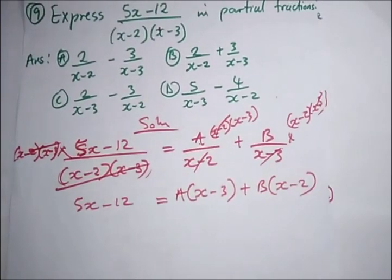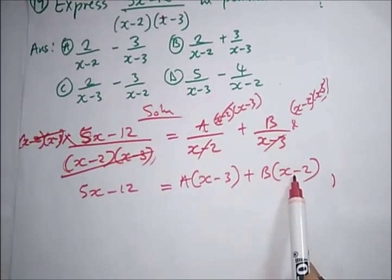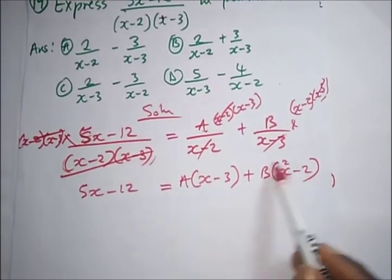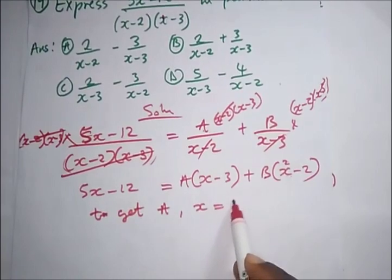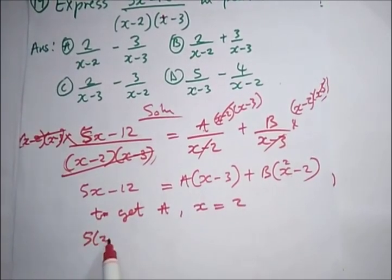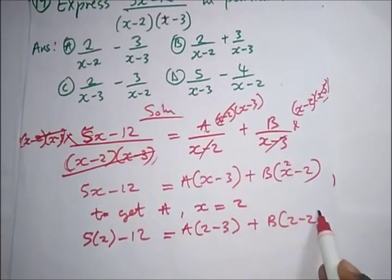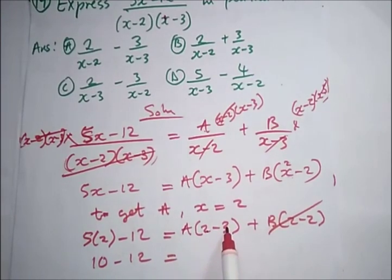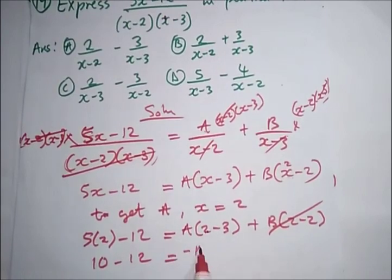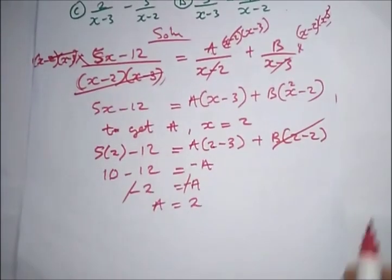To find A, set x = 2 so the B term vanishes: 5(2) − 12 = A(2 − 3), giving 10 − 12 = A(−1), so −2 = −A, meaning A = 2.